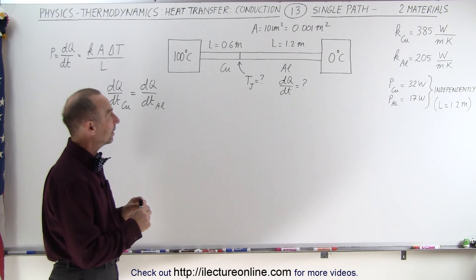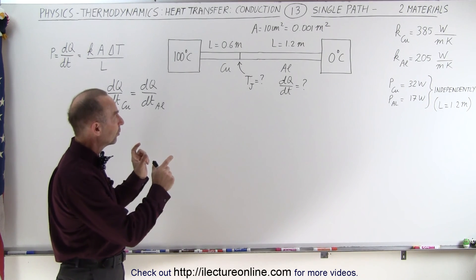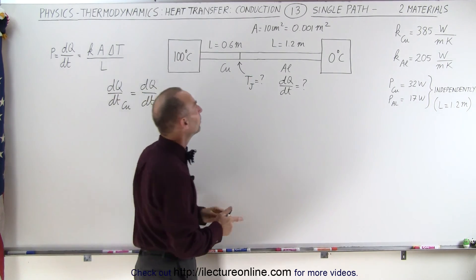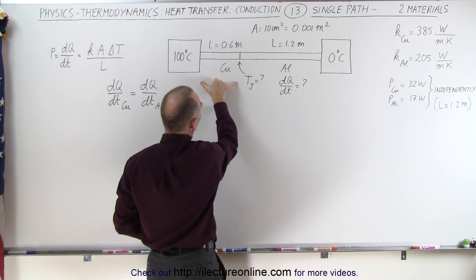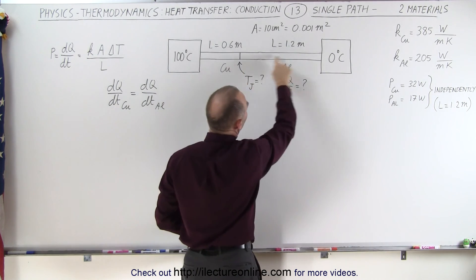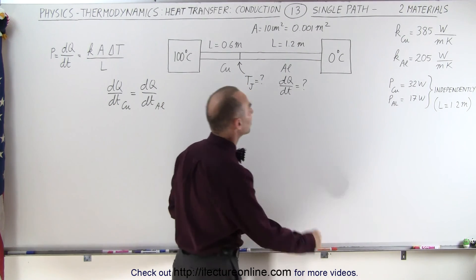We still have a single conducting path. It's still made of the two same materials, copper and aluminum. Same cross-sectional area, but now the lengths are different. The copper section is only 0.6 meters in length and the aluminum section is 1.2 meters in length.